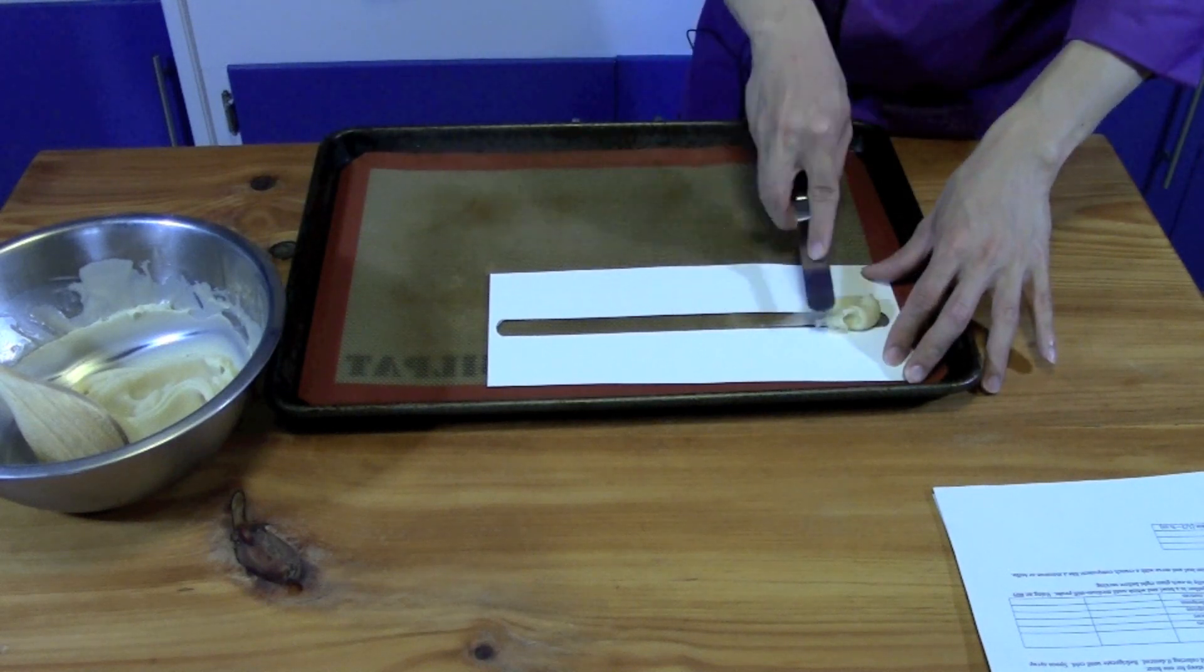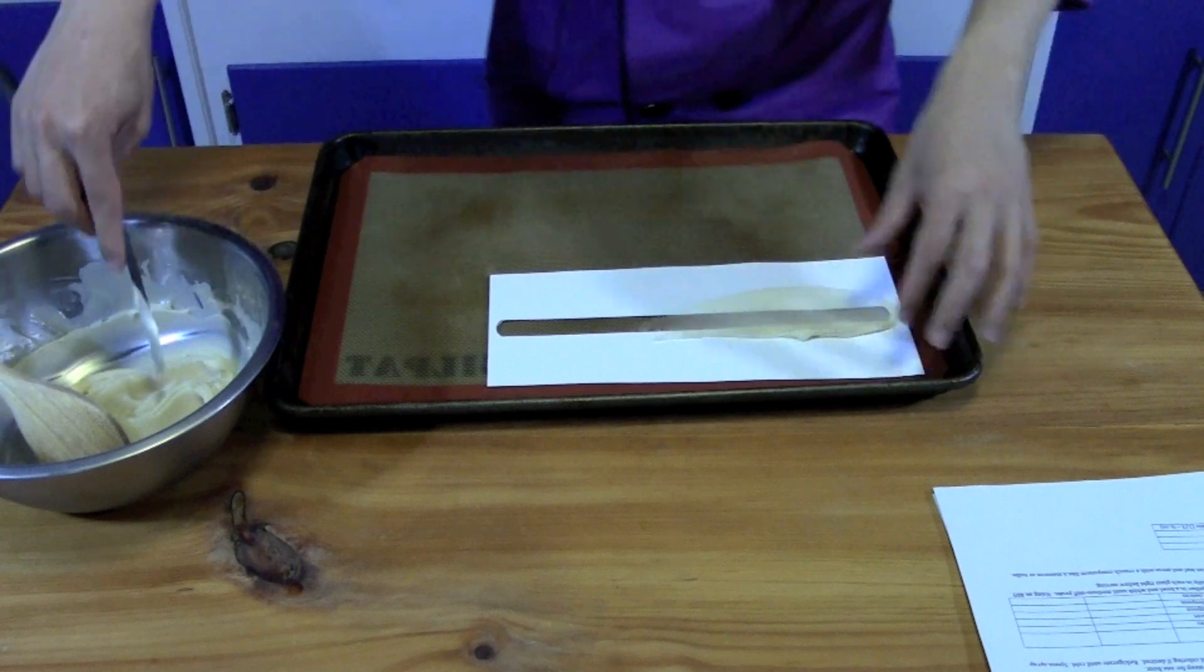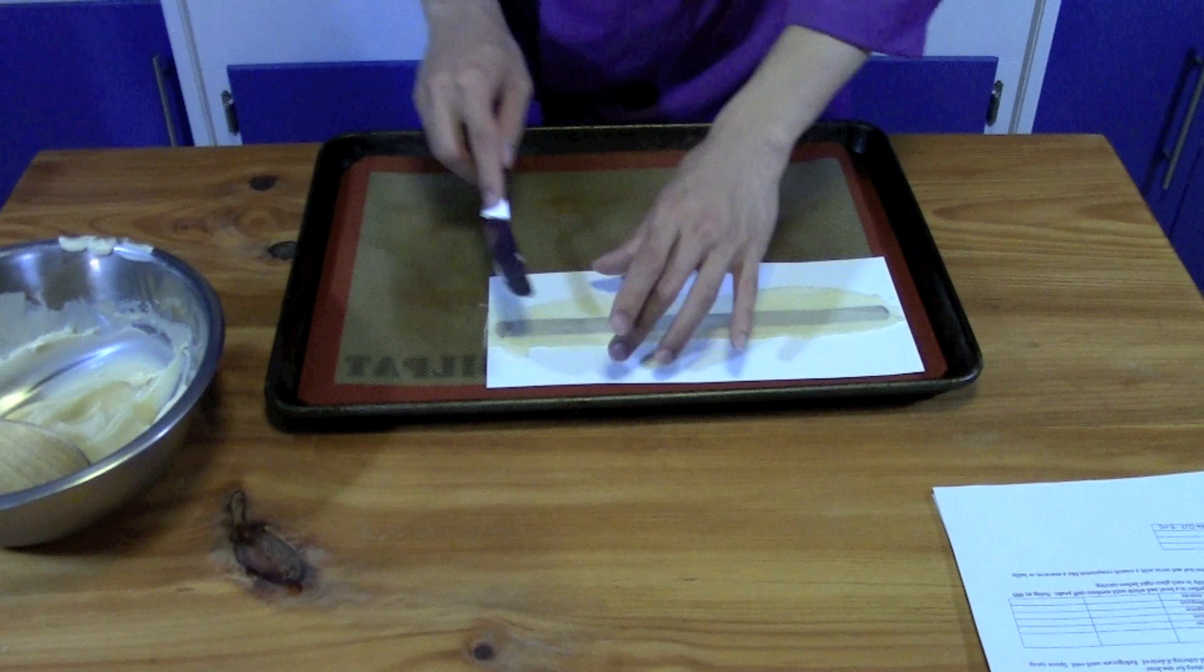So you just want to take a scoop of the tuile paste, and you just want to spread it evenly across your stencil.